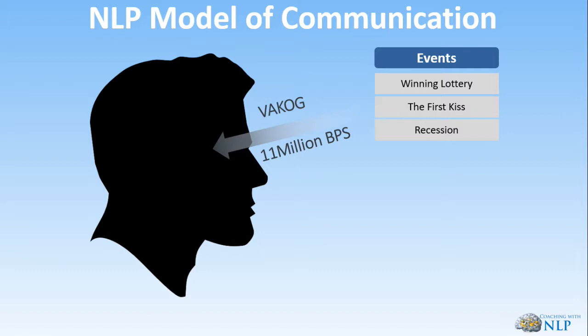So as we have these 11 million bits of information coming at us, we actually delete, generalize, and distort. On page 53, there are filters shown — time, space, matter, energy, language, memories, decisions, values, beliefs, and attitudes — and these are different for each of us. So we delete, generalize, and distort differently, and by the time we take in our 134 bits of information out of that 11 million, it can be a different 134 bits than what you might take in.